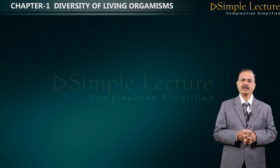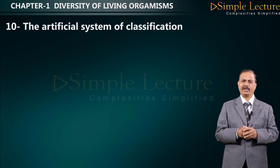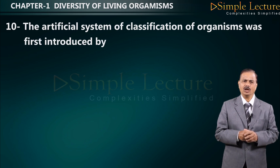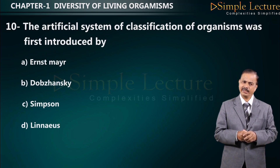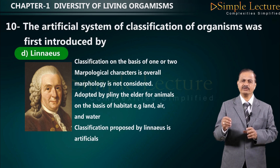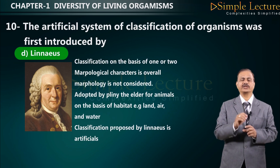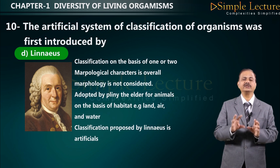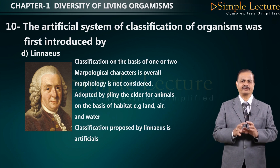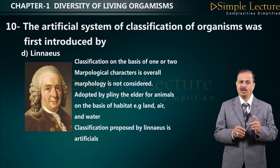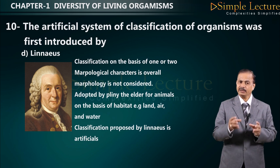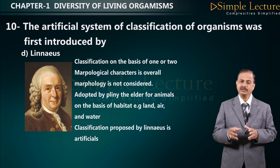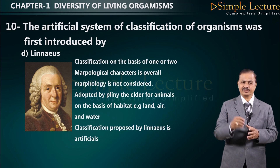Question number ten: the artificial system of classification was first introduced by — options are A: Ernst Mayr, B: Dobzhansky, C: Simpson, D: Linnaeus. The correct answer is D: Linnaeus. Classification was based on one or two morphological characters rather than overall morphology. Pliny the Elder also classified animals artificially based on habitat — land, air, or water. The basic plant classification was given by Linnaeus in his book Systema Naturae.